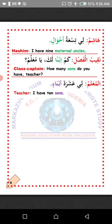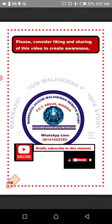Now Naqib al-fasil — the class captain — is asking a question. Naqibun mufrad, nuqaba'u jamu. Kam ibnan laka ya mu'allim? How many sons do you have, teacher? Al-muallim responds: Li asharatu abna'in — I have ten sons. We say asharatu not asharu because what is being counted is male, mudhakkar not mu'annas. La'alaka fahimt — I hope you understand. MashaAllah.